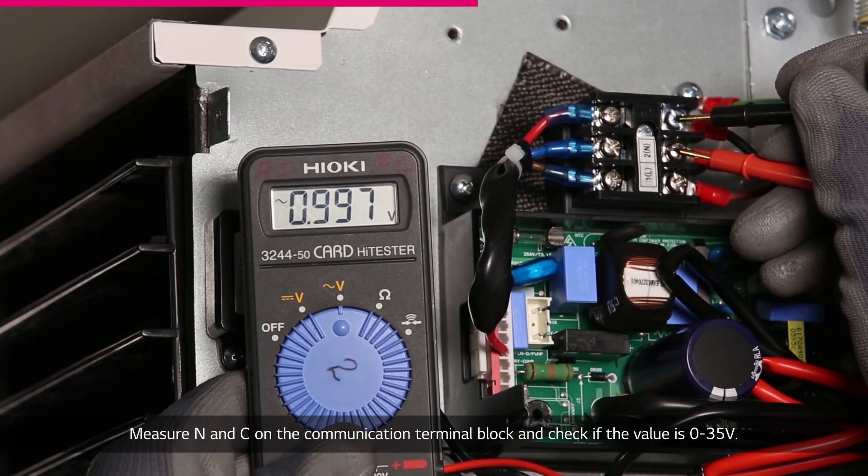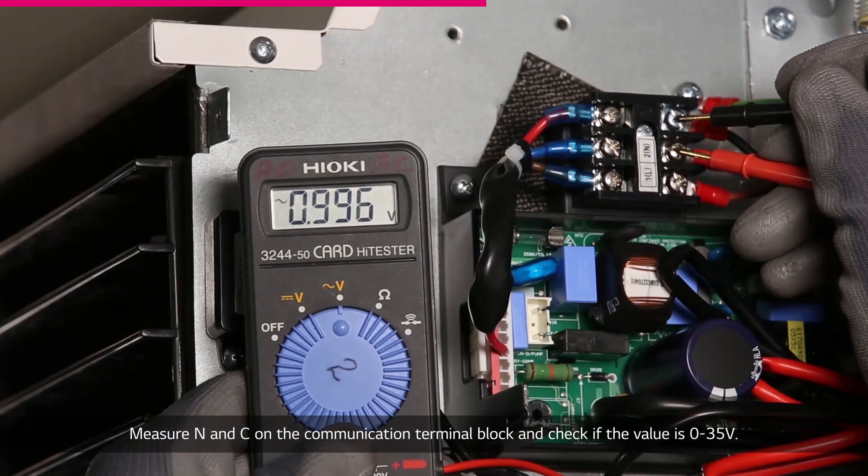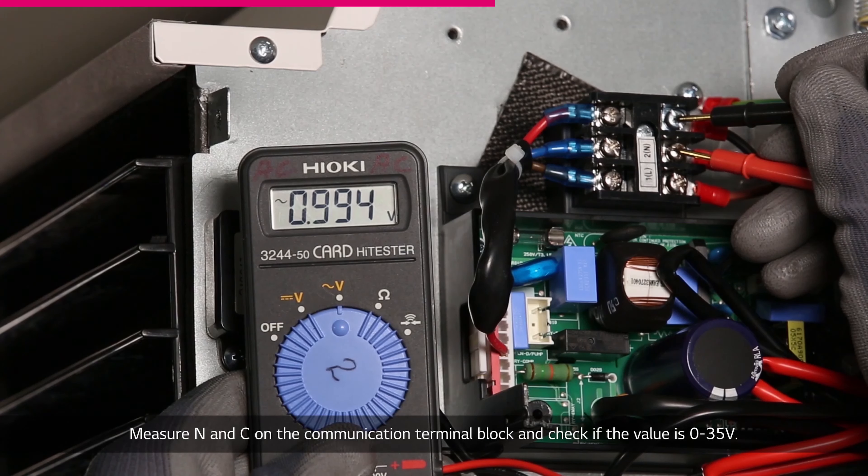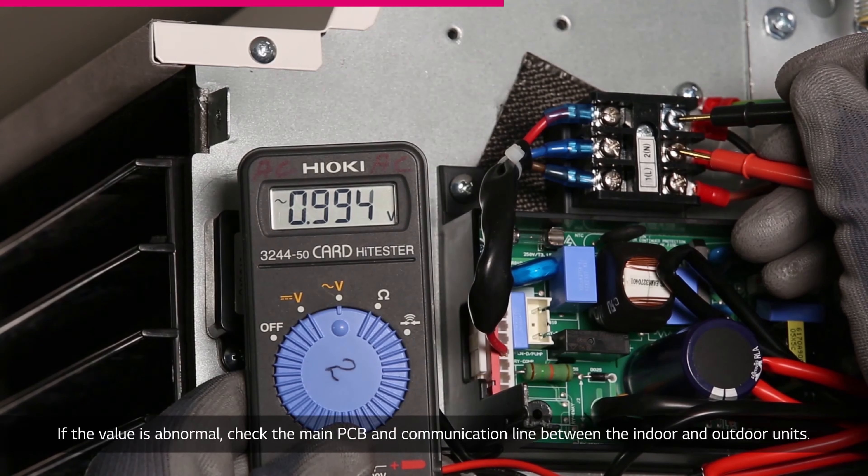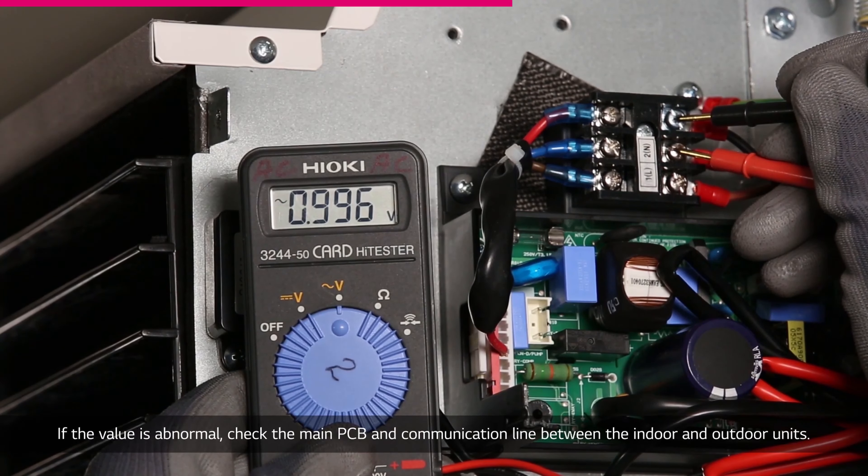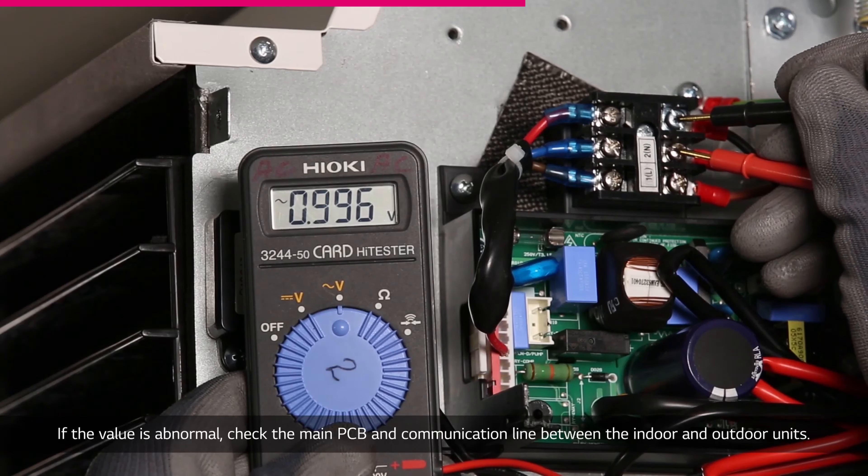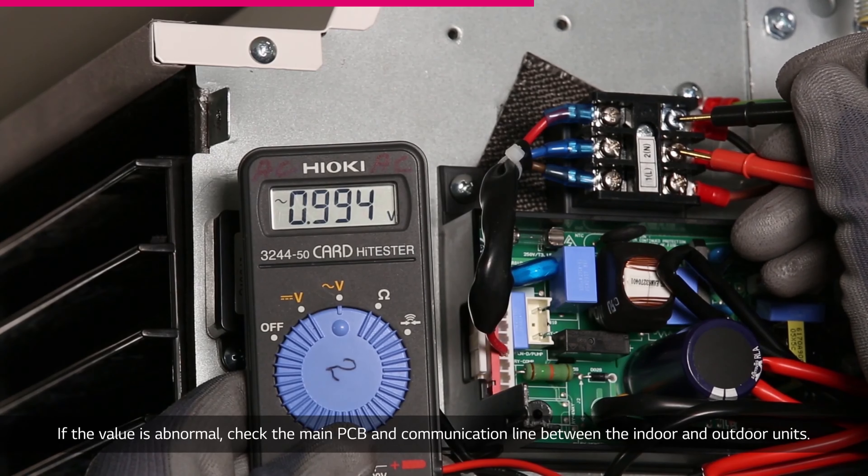Measure N and C on the communication terminal block and check if the value is 0 to 35 volts. If the value is abnormal, check the main PCB and communication line between the indoor and outdoor units.